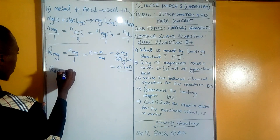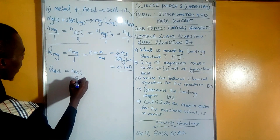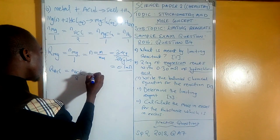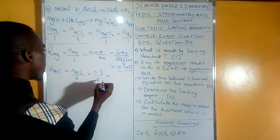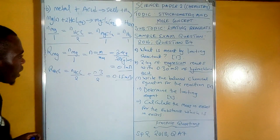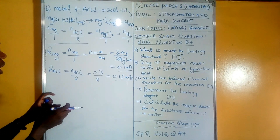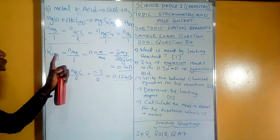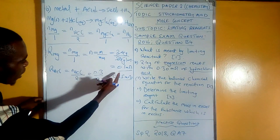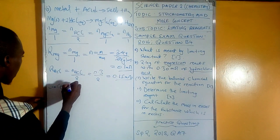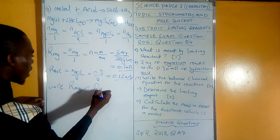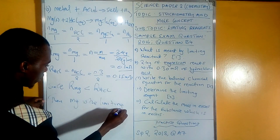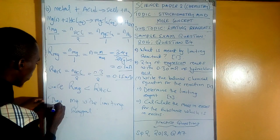Now we test the second reactant: R_HCl = moles of HCl / 2. The question gives us 0.3 moles of HCl, so R_HCl = 0.3 / 2 = 0.15 moles. To find the limiting reagent, we find the one with the lesser value, because a limiting reagent is the one in short supply by mole ratio. Since R_Mg (0.1) is less than R_HCl (0.15), magnesium is the limiting reagent.